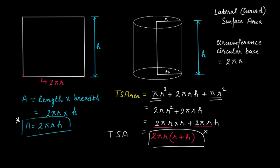So this is the formula to calculate the lateral or curved surface area of a cylinder, and this formula gives us the total surface area of a cylinder.